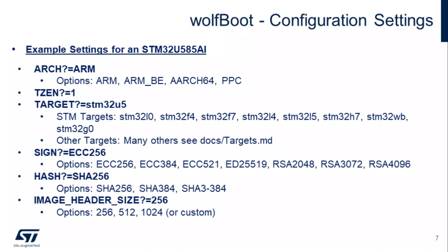We have a few different hash options as well — that's the digest computed over the firmware image, and that digest is what gets signed. The image header size is the amount of space reserved at the beginning after we apply the signature, which contains information like the hash, the signature, the type, and the version. You can enlarge that to a different size and add additional values if needed.